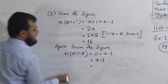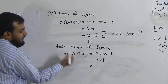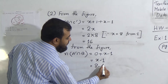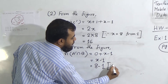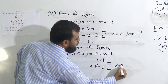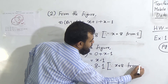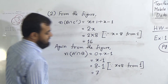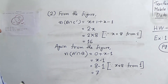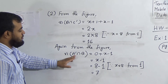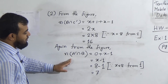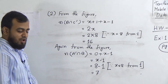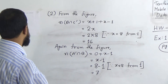We know x = 8 from Activity 1. So n(A'∩B) = 0 + (8−1) = 8 − 1 = 7. Therefore, the number of elements of A prime intersection B equals 7.